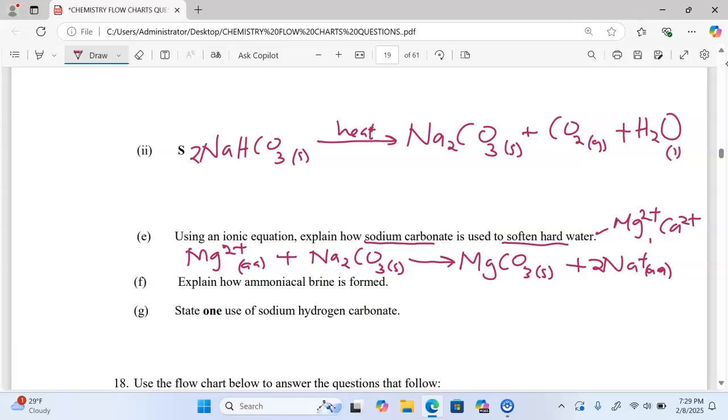Explain how ammoniacal brine is formed. Ammoniacal brine is formed by dissolving ammonia in brine. That is where the term ammoniacal brine comes from.